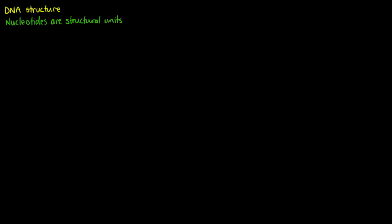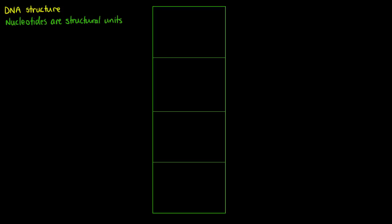With DNA, the first thing we'll want to know is that it is comprised of nucleotides, and these nucleotides have four possible bases. These bases are adenine, guanine, thymine, and cytosine, and I'll put a picture of what the chemical structure of each one of these bases looks like.